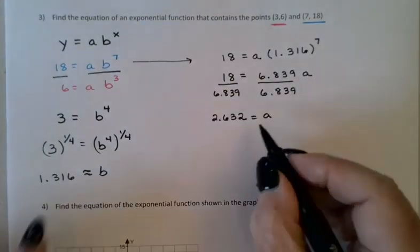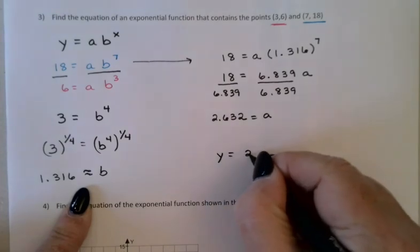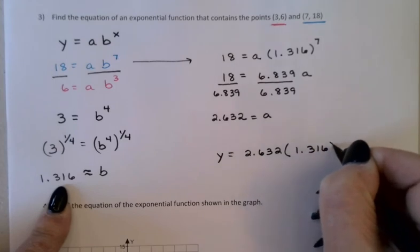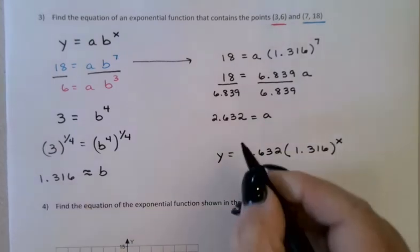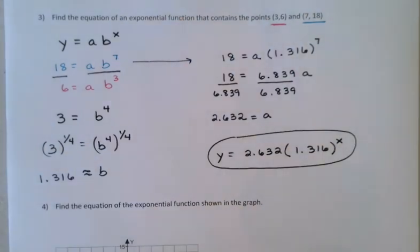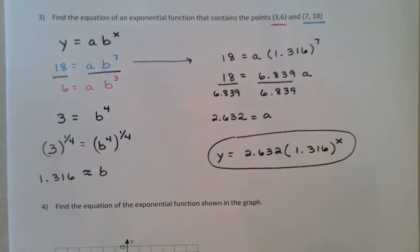So here we go. We know both a and b now. And our function is y equals 2.632 times 1.316 to the x power. I won't take the time to do it on the video, but again, if you'd like to check that, you could of course just plug the equation into your calculator and see if those two points, at least approximately, are on there.